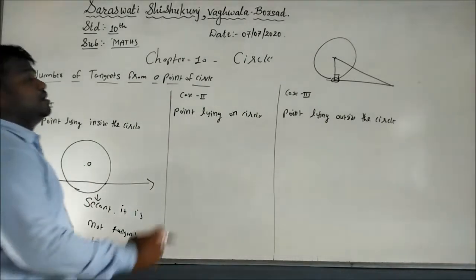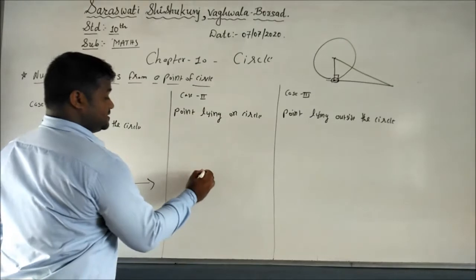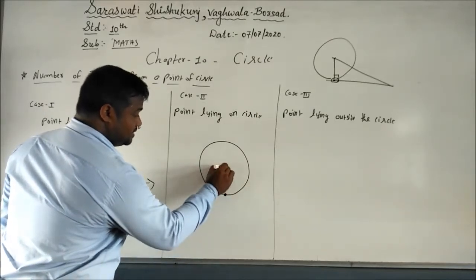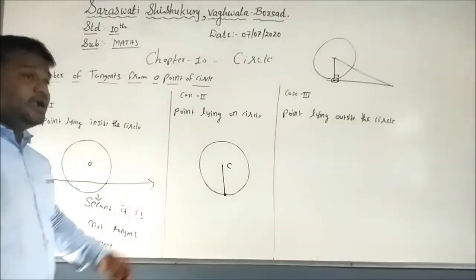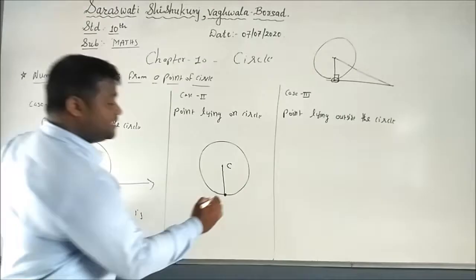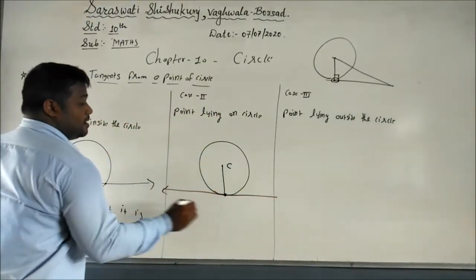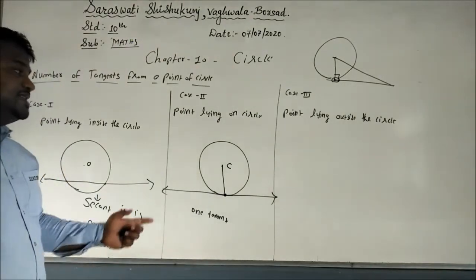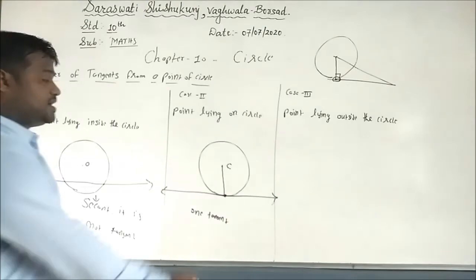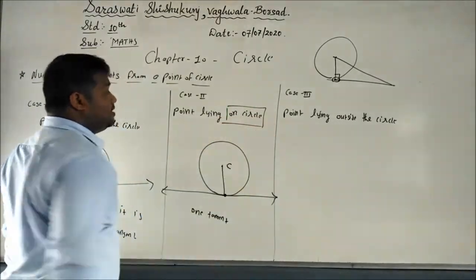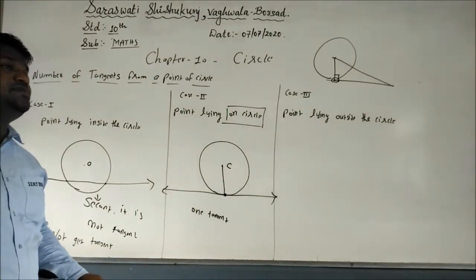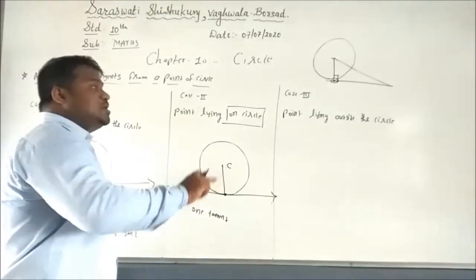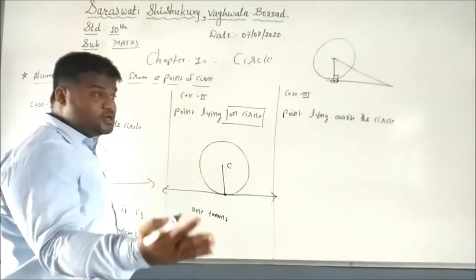So when the point is inside the circle, we are not getting any tangent. Case two: the point lies on the circle. When the point is on the circle, you can draw one tangent at that point — a tangent touches one and only one point of a circle. Now, a circle has infinitely many points, so you can get infinitely many tangents on a circle overall.